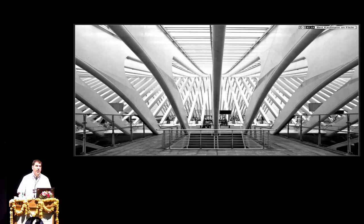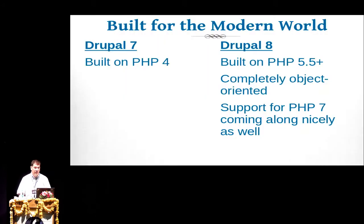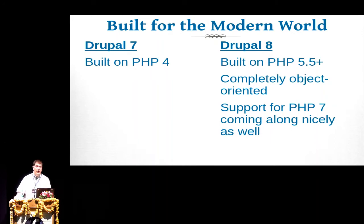Drupal 8 was specifically built for modern web development standards. Drupal 7 was really built on PHP 4, functional PHP programming. In Drupal 8, we've built on the new functionality in PHP with object orientation and namespaces, so everything in Drupal 8 is object-oriented PHP. We've even gone so far as to make it work with PHP 7, even though PHP 7 hasn't been released yet. So it's kind of modern PHP.